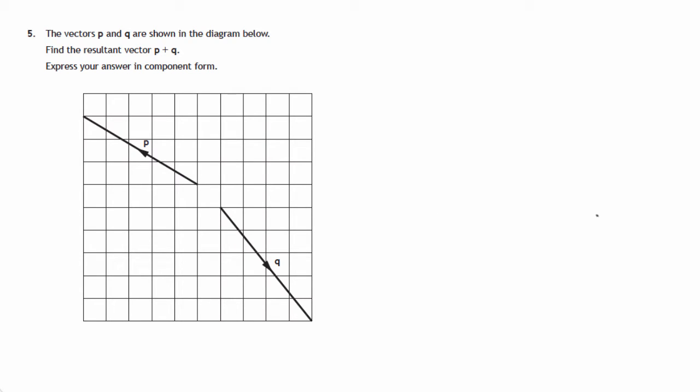So a couple of ways that we can do this question. First one is by drawing the addition on this grid. So we're looking at this vector Q, and let's move that vector Q to start where P finished.